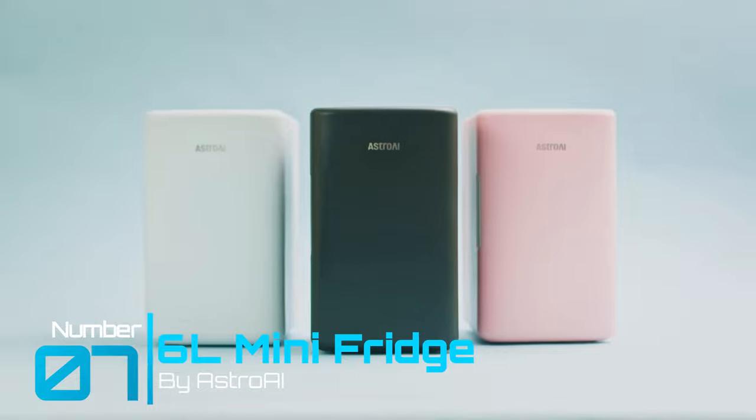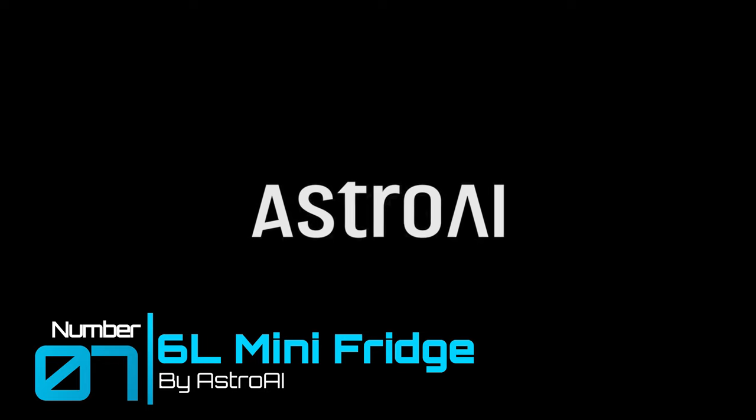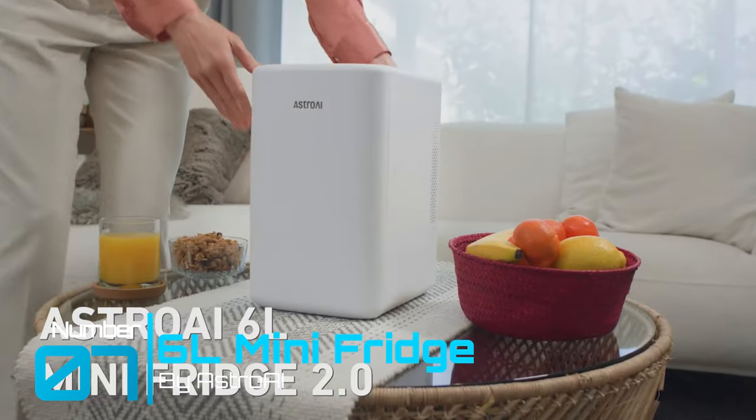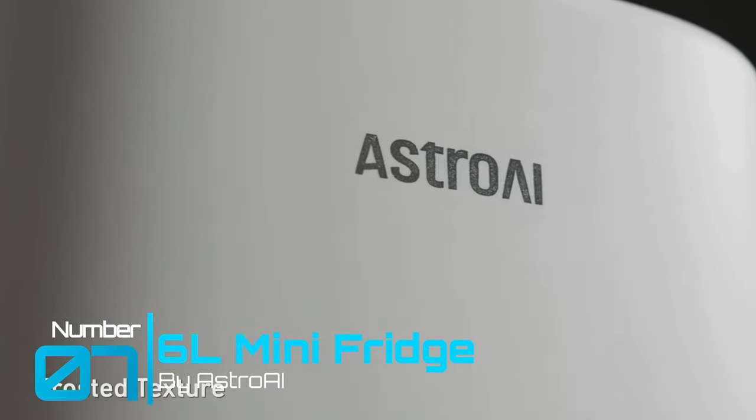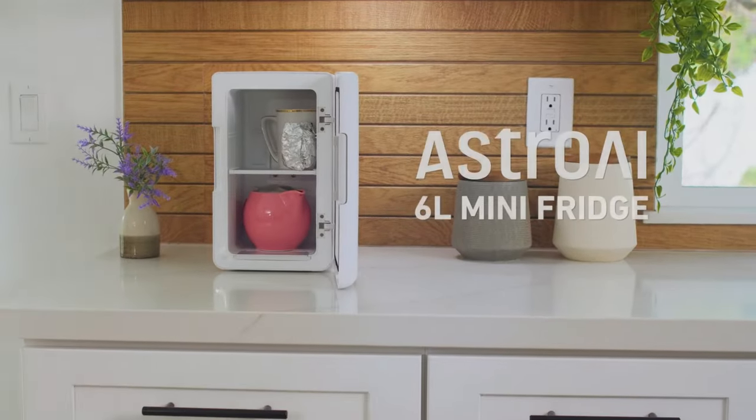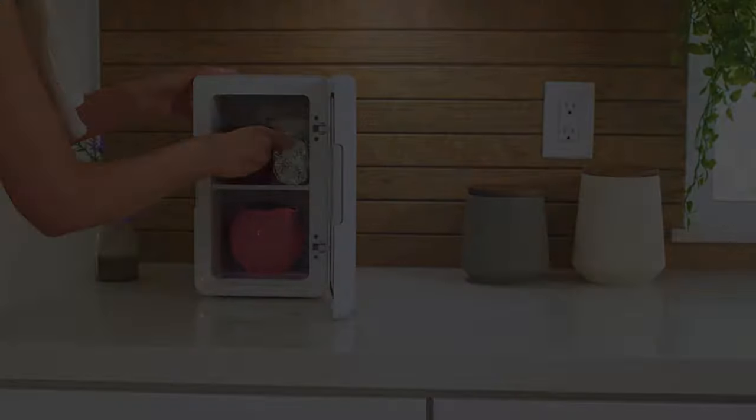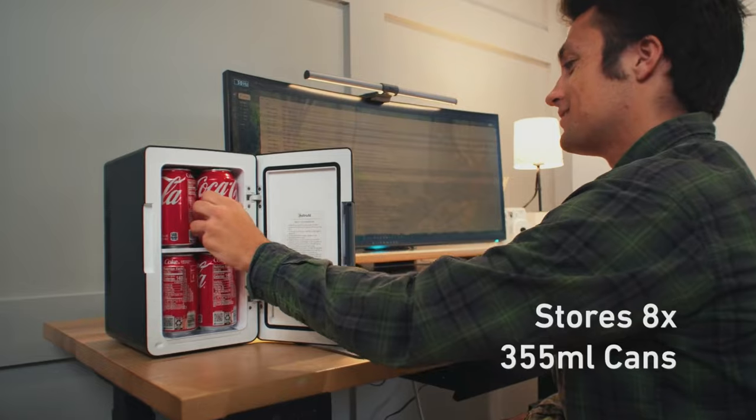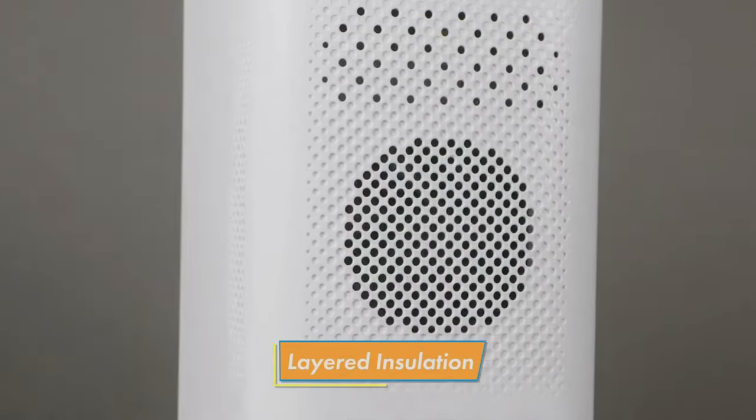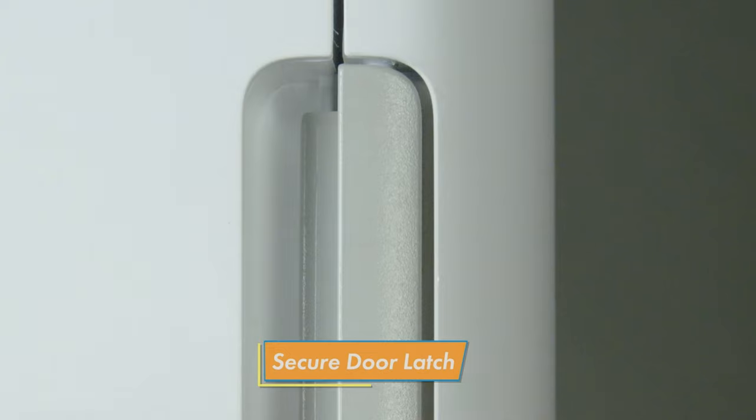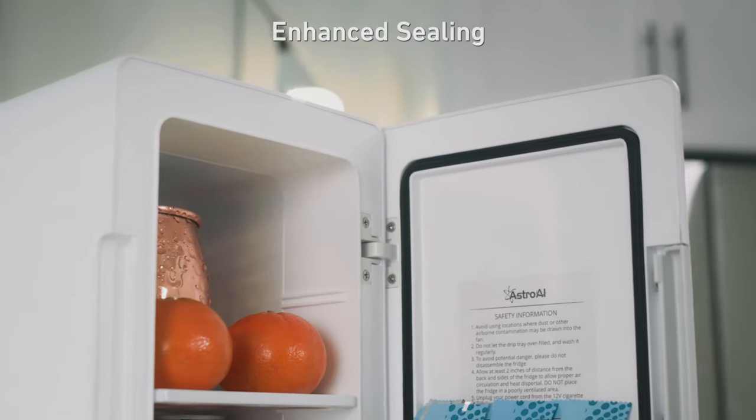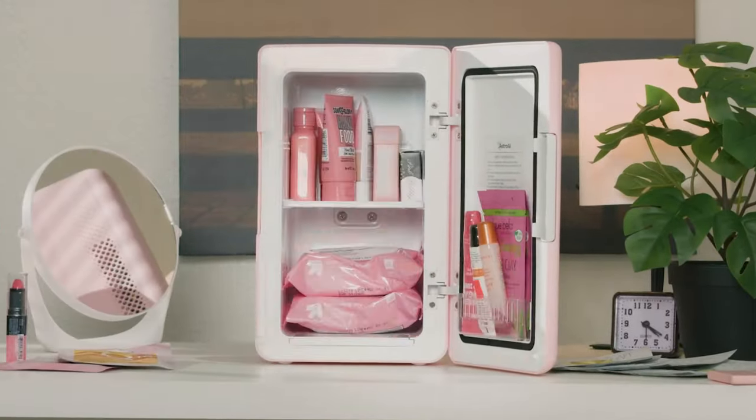Gadget number seven: Mini Fridge by Astro AI. If there ever was a fridge designed for an individual, this would probably be it. This six-liter mini fridge comes equipped with an adjustable two-level shelf and can store up to eight 355-milliliter cans of pop. The seal is efficient as the door comes with a secure latch that clamps into place. You can choose to keep your fridge super cool or make it a warmer with temps up to 150 degrees Fahrenheit or 66 degrees Celsius.